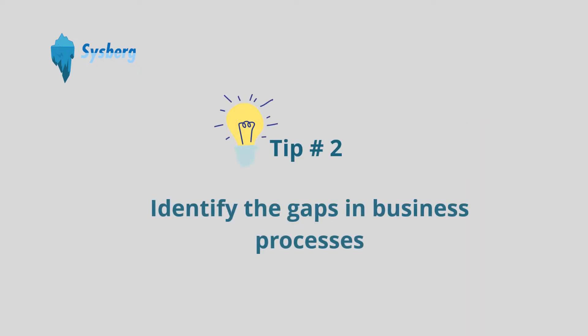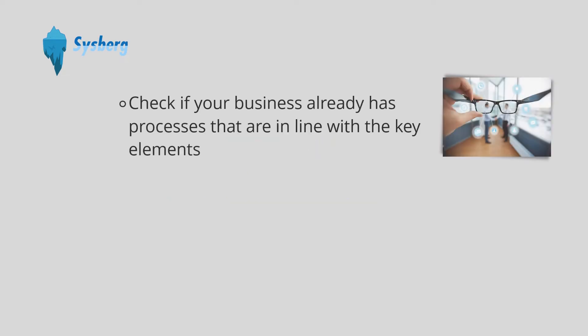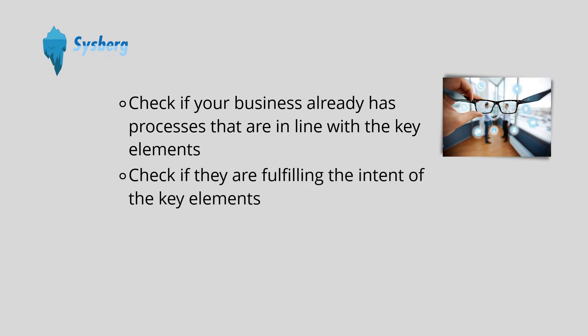Tip number two: identify the gaps in business processes. Once you have understood the concept and reviewed the key elements, check if your business already has processes that are in line with the key elements — that is, if they are fulfilling the intent of the key elements.